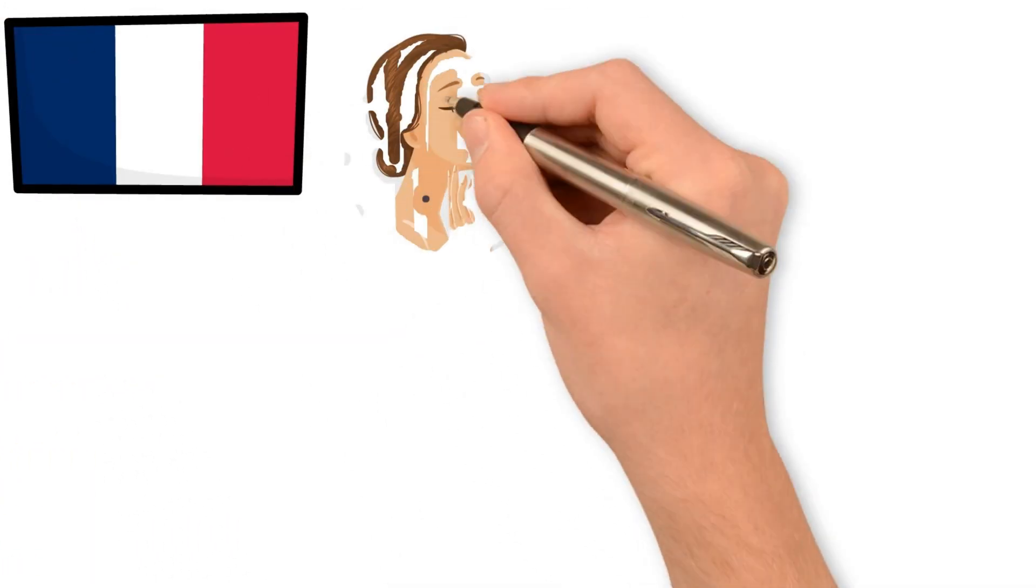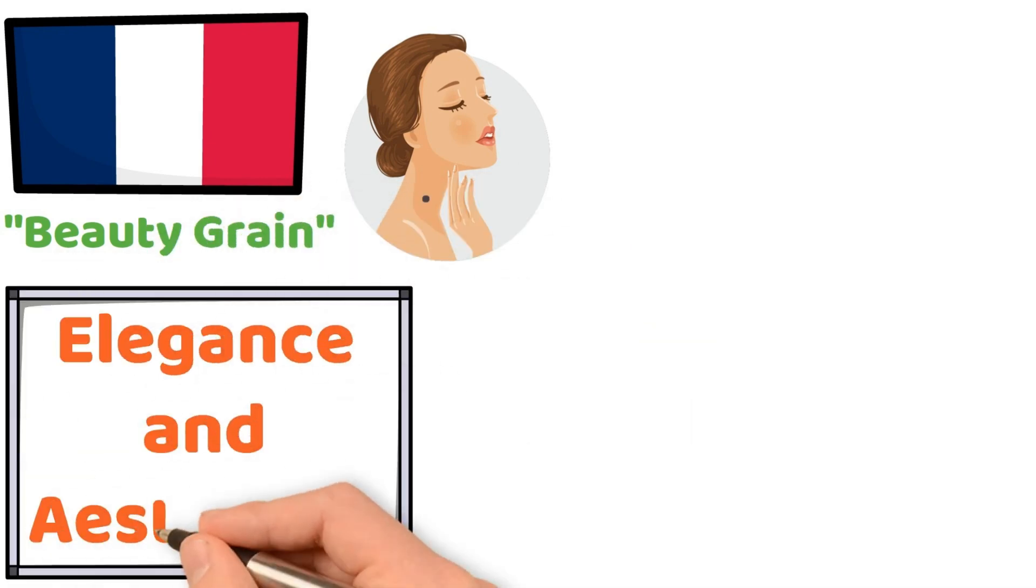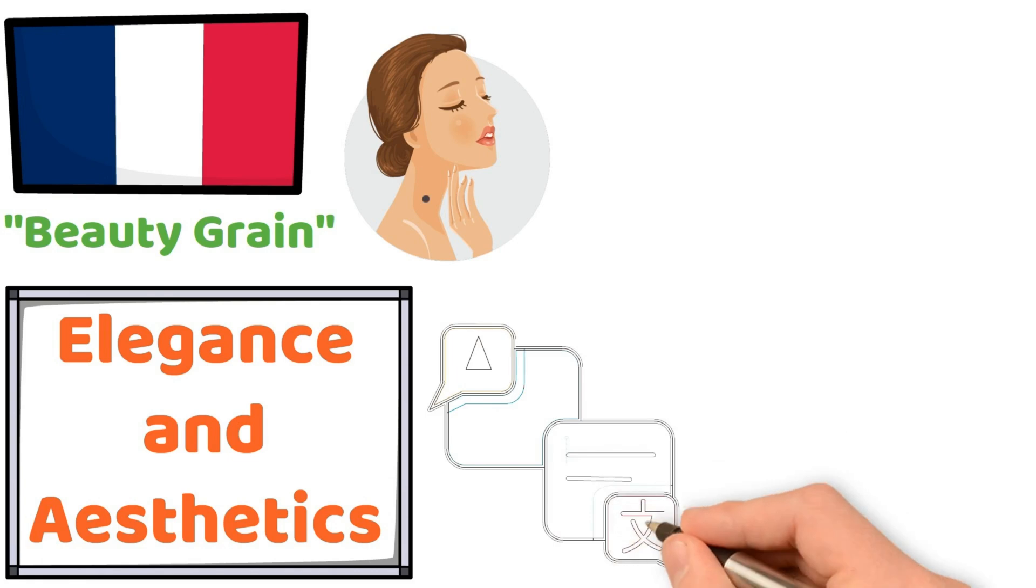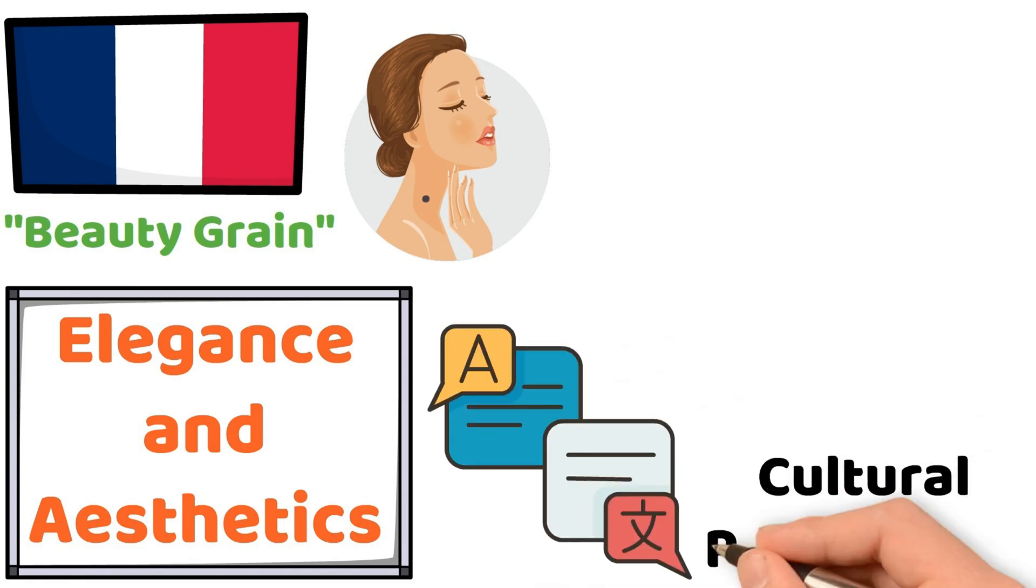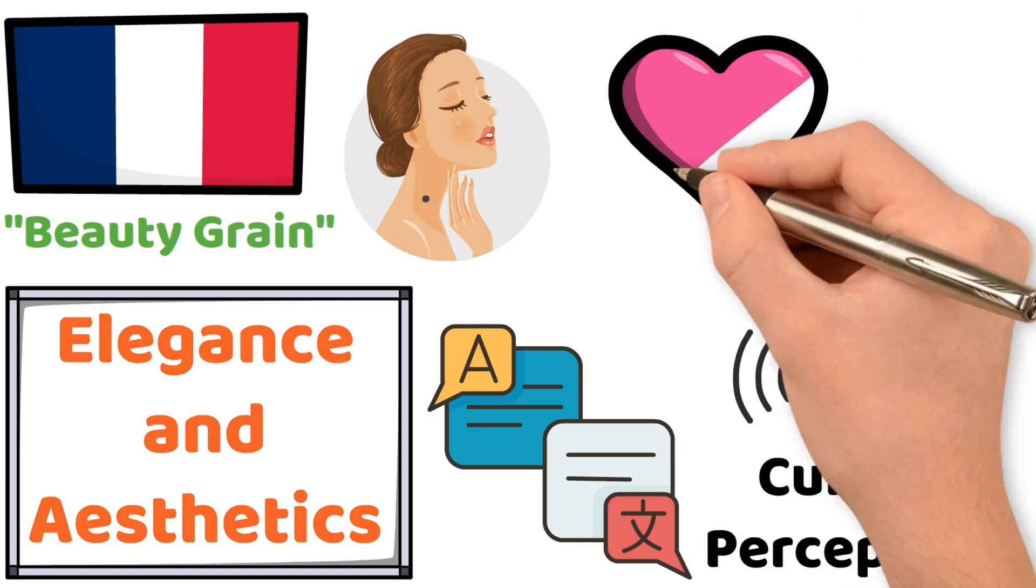On the other hand, in French, calling a mole a beauty grain reflects a value placed on elegance and aesthetics. Examples like this reveal how languages are shaped by cultural perceptions and values, and about how cultural perspectives shape language, reflecting unique ways of seeing and describing the world.